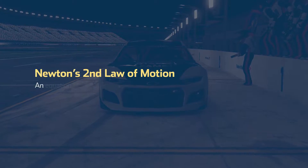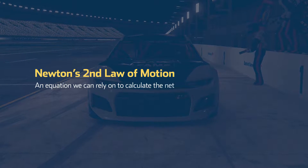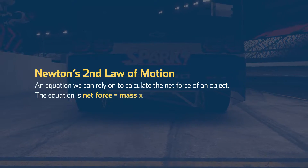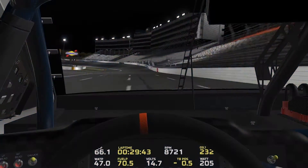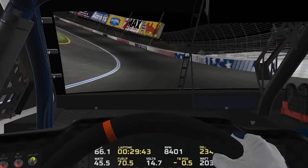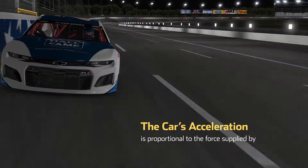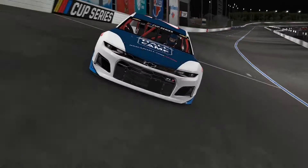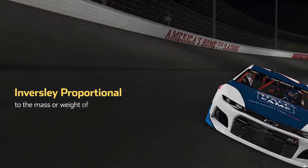Law two is an equation we can rely on to calculate the net force of an object. The equation is: net force equals mass times acceleration. In the case of our race car going around the track, the car's acceleration is proportional to the force supplied by the engine, and inversely proportional to the mass, or weight, of the car.